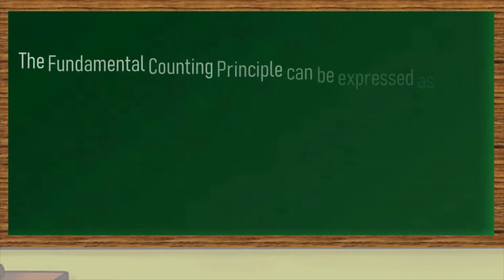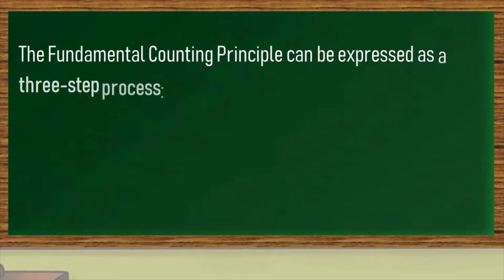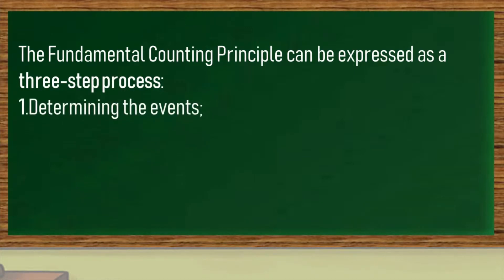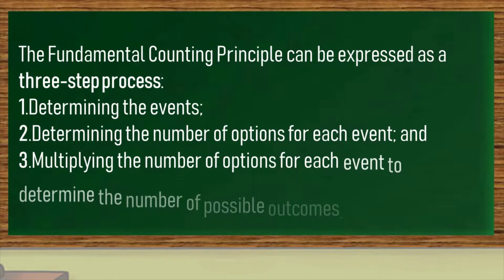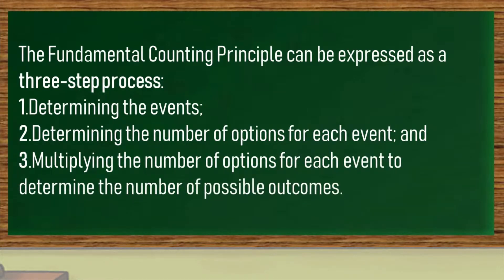Fundamental counting principle is a 3-step process. The first step would be determining the events or simply identifying the variables in the situation. The second step is determining the number of options for each event. And the last step is multiplying the number of options for each event to determine the number of possible outcomes.